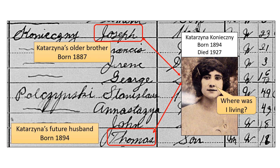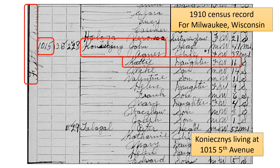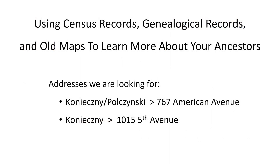So where was Katarzyna living at this time? Here is Katarzyna, or Catty as she was known, still living with her parents, John and Agnes, in 1910, all living with a total of 14 people at 1015 Fifth Avenue. I have no idea who their other housemates were, presumably some type of relatives, but that's a question for a different day. So here then are the addresses we are now looking for.